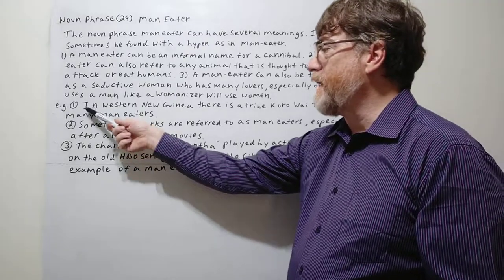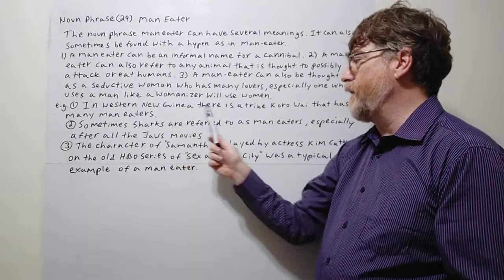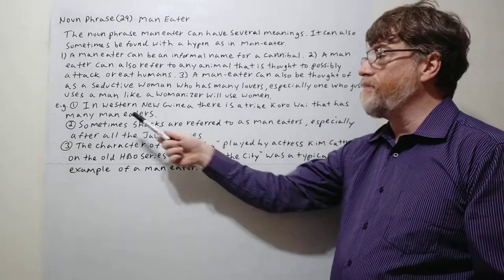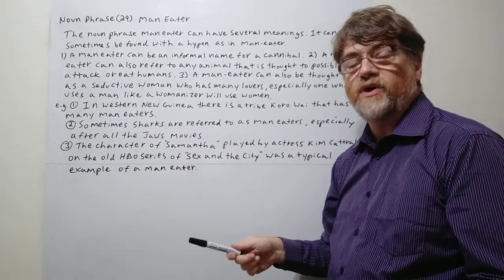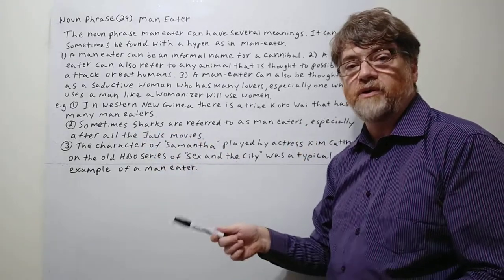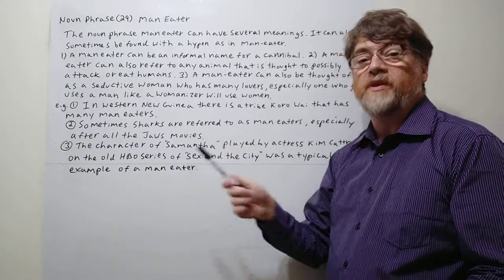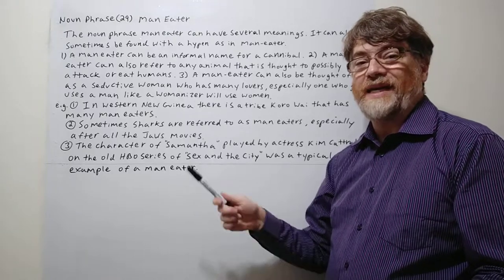Here's the first example. In western New Guinea there is a tribe, Korowai, that has many man-eaters. Of course, this is in reference to the cannibals. So this is a cannibalistic tribe. They have a number of people that will eat other people, so you could refer to them as man-eaters.